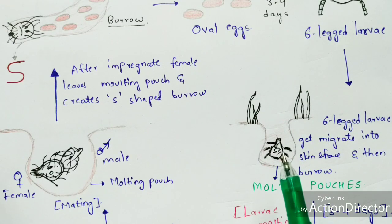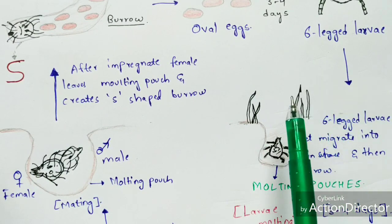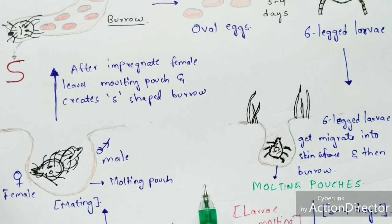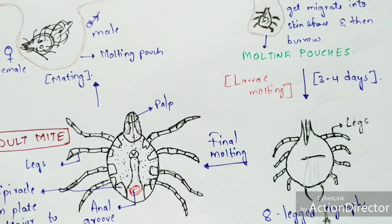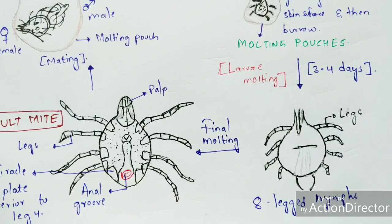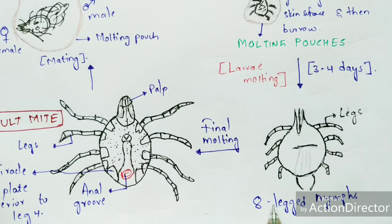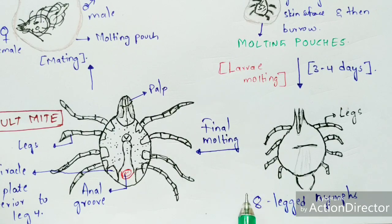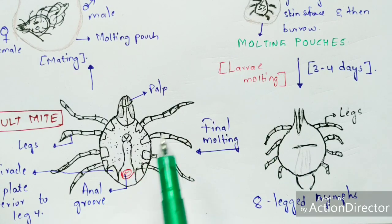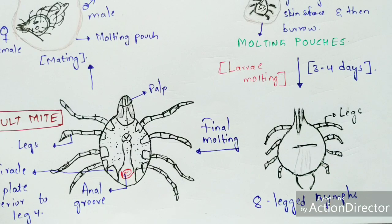The six-legged larva undergoes molting within the molting pouch. After three to four days, the six-legged larva gets transformed into an eight-legged form — we call this the nymph — because after the molting process it reaches a more mature form, developing eight legs instead of six. This process is called larva molting and occurs within three to four days.